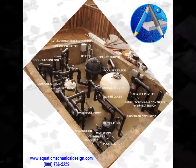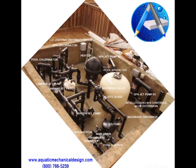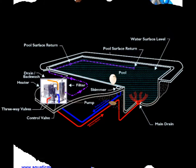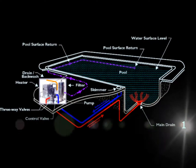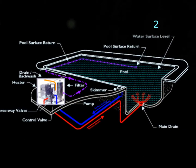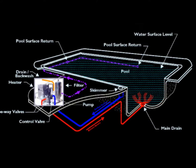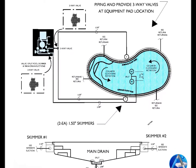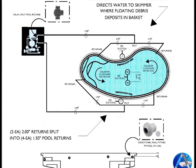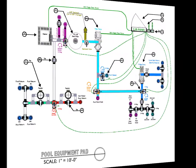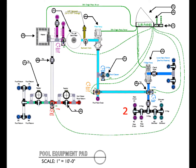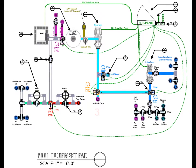Our Sheet P6 Equipment Pad Layout information corresponds with the numeric designations of our P2 Plumbing and Lighting Plan. The purpose of this is to provide directions for where the pool's piping and conduit infrastructures are to connect to the pool equipment at the pad. The equipment pad's piping and conduit connections will correspond with the interconnecting numeric designations coming from the pool.